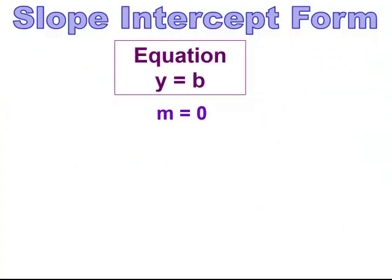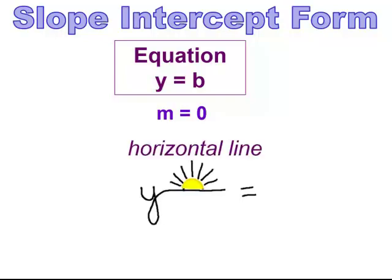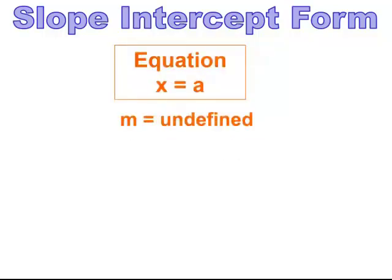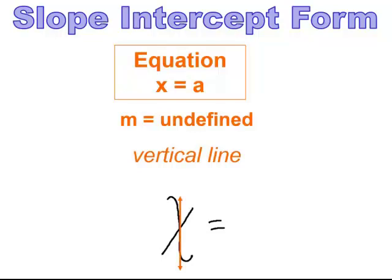When you're given an equation that's just y equals some number, the slope is 0, meaning it's a horizontal line. Go to where the y value is and draw a horizontal line. A way to remember: y creates a horizontal line — like the horizon. When you have x equals a value, the slope is undefined, giving a vertical line. You can remember this because x can create a vertical line.